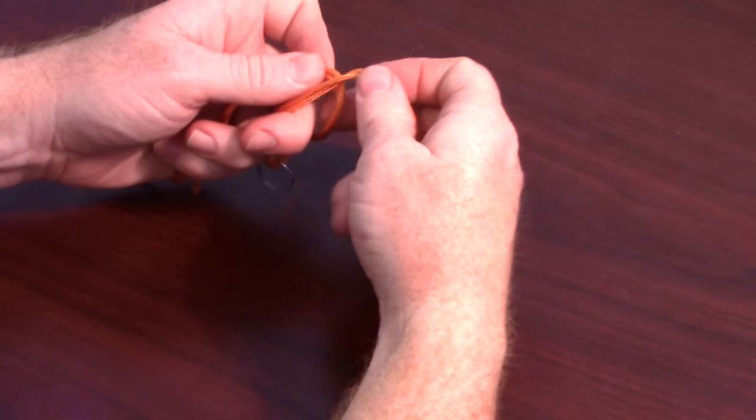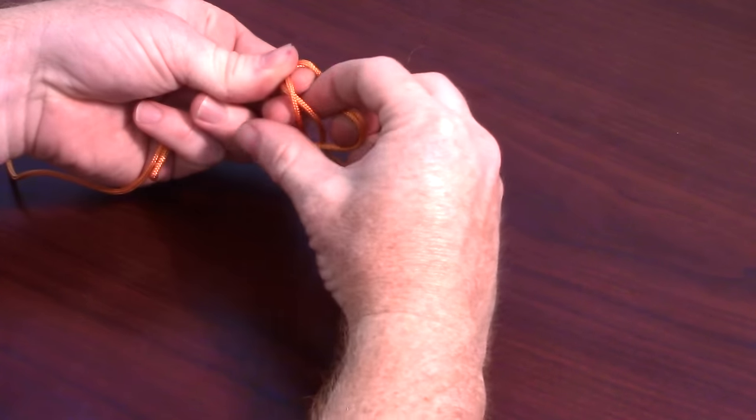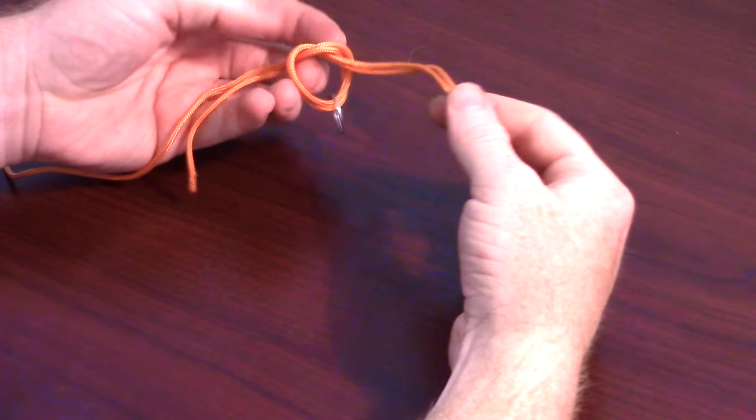Next we will cross the line and create a loop. Then wrap that end of the line under the loop. We have now created a half knot here, kind of like the start of tying your shoelaces.